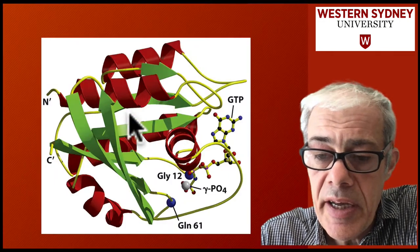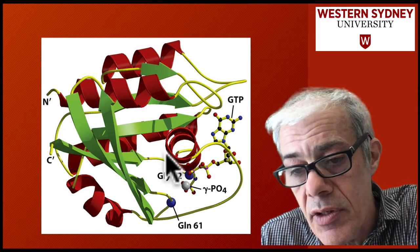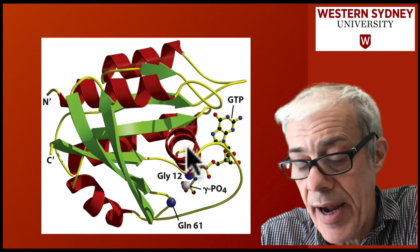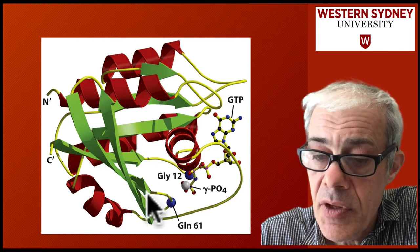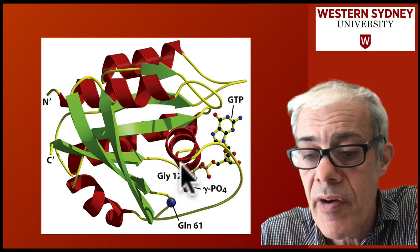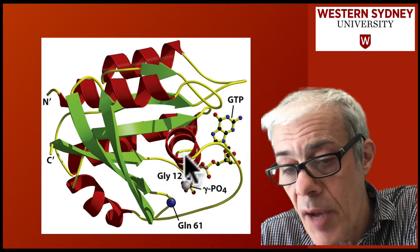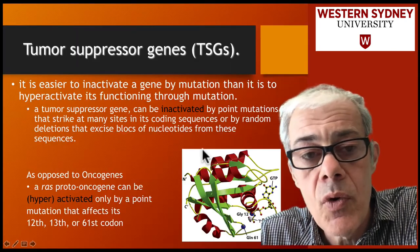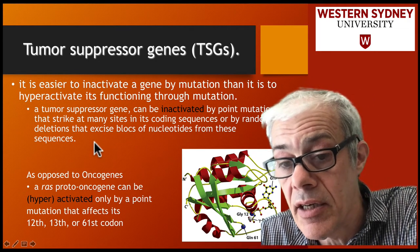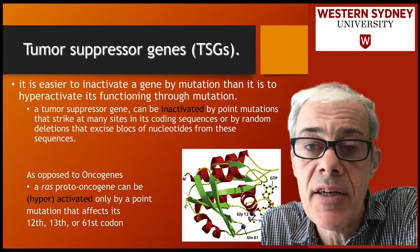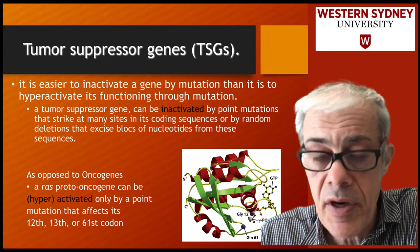In the RAS oncogene, there are only one or two positions in the entire sequence that, when mutated, lead to hyperactivation. Most mutations would lead to loss of activity, but those key positions are critical to function. For most tumour suppressor genes acting as brakes, most mutations can inactivate them — you can lose these protein functions through mutation.